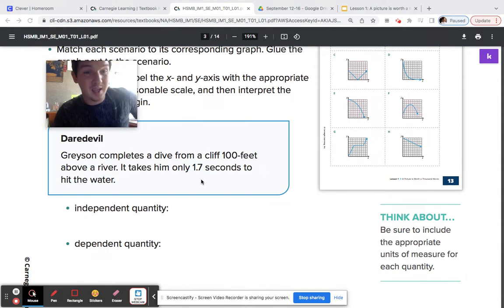But this one, for instance, time is going to take Grayson 1.7 seconds to hit the water at 100 feet every single time. So our independent quantity here is going to be 1.7 seconds to hit the water.